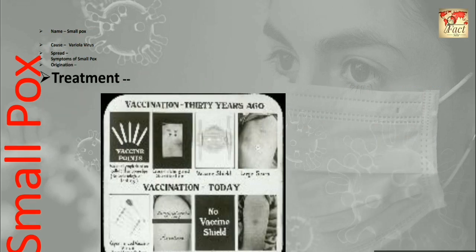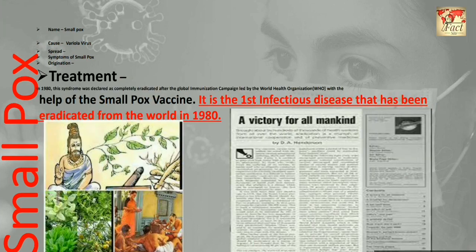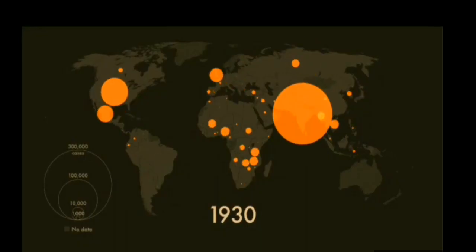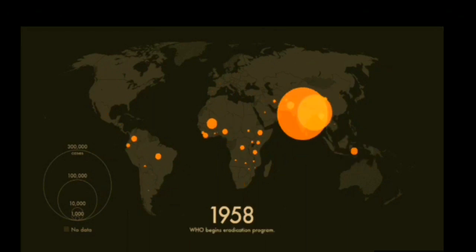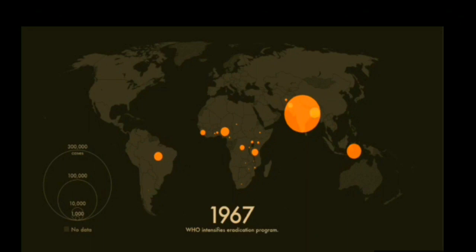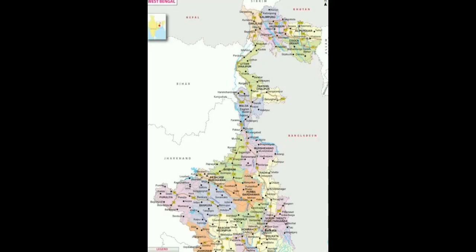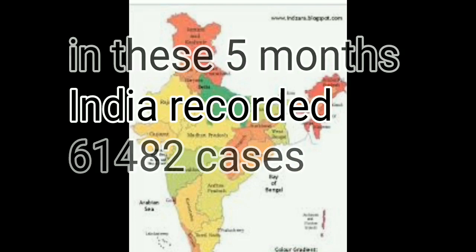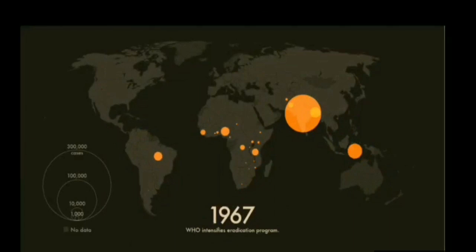Now let's discuss about the treatment for smallpox. In 1980, smallpox was declared completely eradicated following a global immunization campaign led by the World Health Organization. With the help of the smallpox vaccine, it became the first infectious disease eradicated from the world. The 1974 smallpox epidemic in India was one of the worst of the 20th century. Over 15,000 people contracted and died from smallpox between January and May 1974, mostly in the Indian states of Bihar, Odisha, and West Bengal. In those five months, India reported 61,482 cases of smallpox to WHO, accounting for over 86% of the world's smallpox cases in 1974.